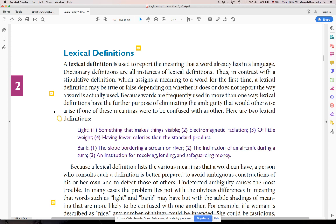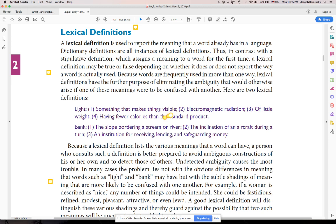You might say the slope bordering your stream or river, semicolon, the inclination of an aircraft. Every time you see a semicolon right after that is a new definition. So lexical, they avoid ambiguity. People use the words ambiguity and vague a lot. Sometimes they don't know what they mean.